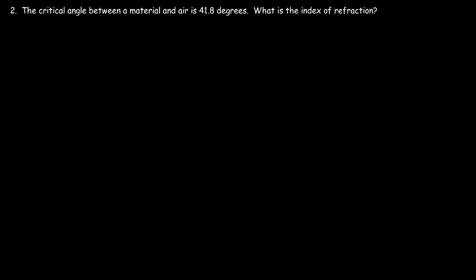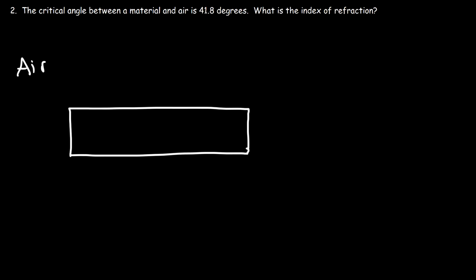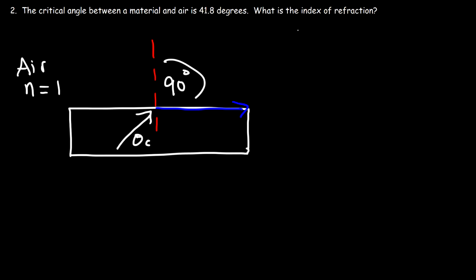Number two: the critical angle between a material and air is 41.8 degrees. What is the index of refraction? So let's say the material is on one side and air is on the other, with a normal line at the boundary. The light ray has to go from the material with a high index of refraction to air, because air has the lowest index — nearly that of a vacuum. We know the incident angle is the critical angle, and whenever the incident angle is the critical angle, the angle of refraction will always be 90°.